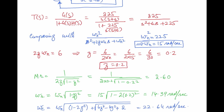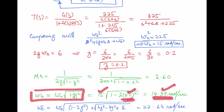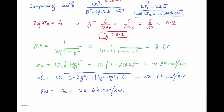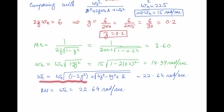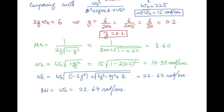Using the expression for Mr with ζ = 0.2, the maximum magnitude is 2.60. The resonant frequency is ωr = ωn√(1 - 2ζ²) = 14.39 rad/s, meaning the system gives maximum gain at 14.39 rad/s. The cutoff frequency (bandwidth) is computed as ωc = 22.64 rad/s, so signals from 0 to 22.64 rad/s pass with little attenuation; beyond this frequency attenuation exceeds 3 dB.